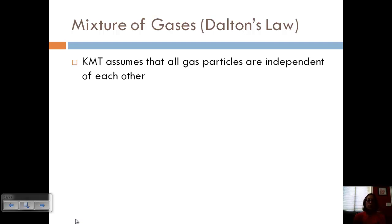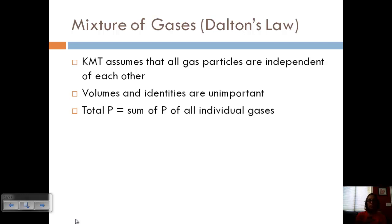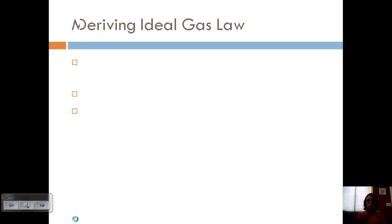Let's look at Dalton's law, which covers partial pressure. Kinetic molecular theory assumes that all gas particles are independent of each other — they don't exert forces on each other. We also said that volumes and identities were unimportant. And so the total pressure is equal to the sum of the pressures of all the individual gases, because if they're independent of each other, we can just add them together to get the total pressure.